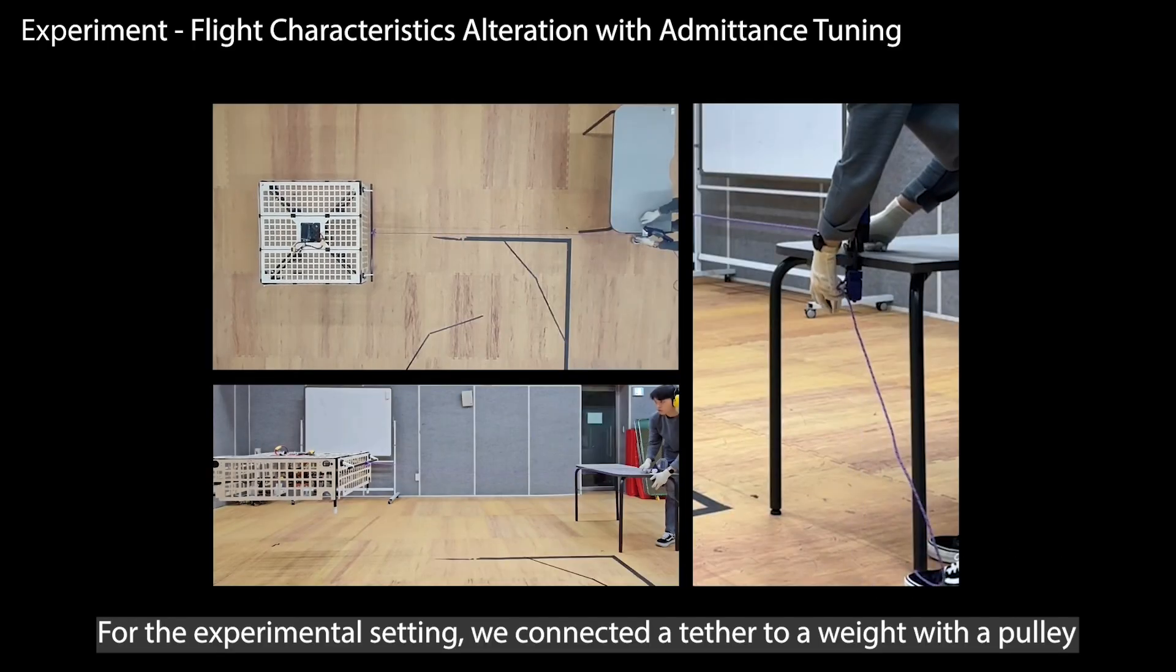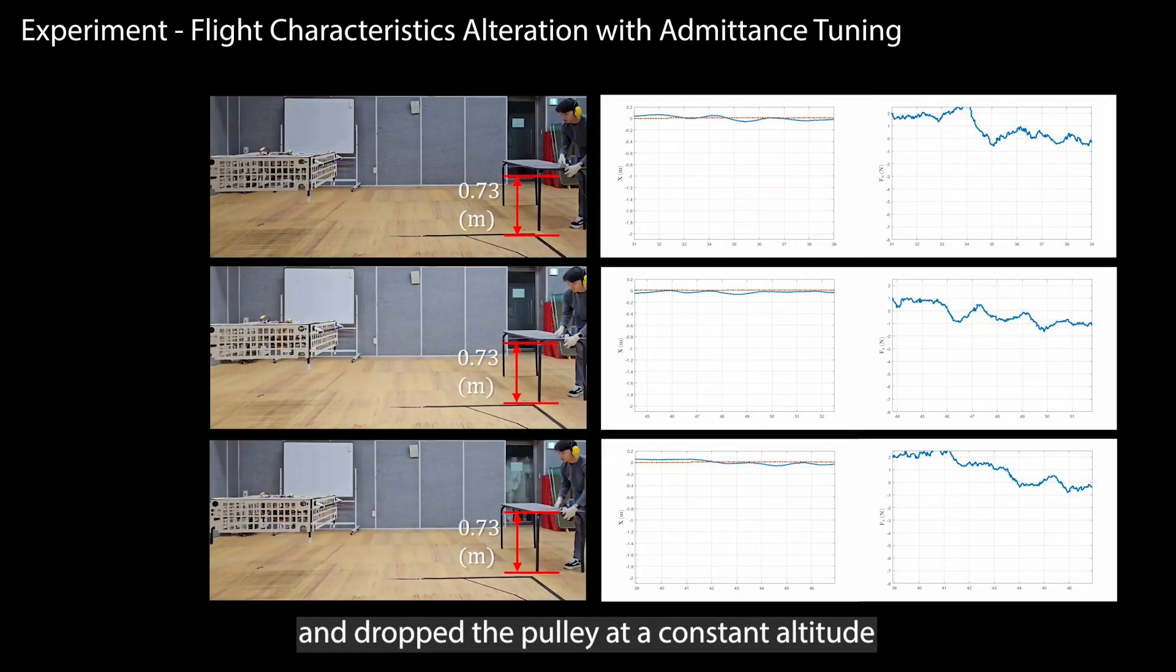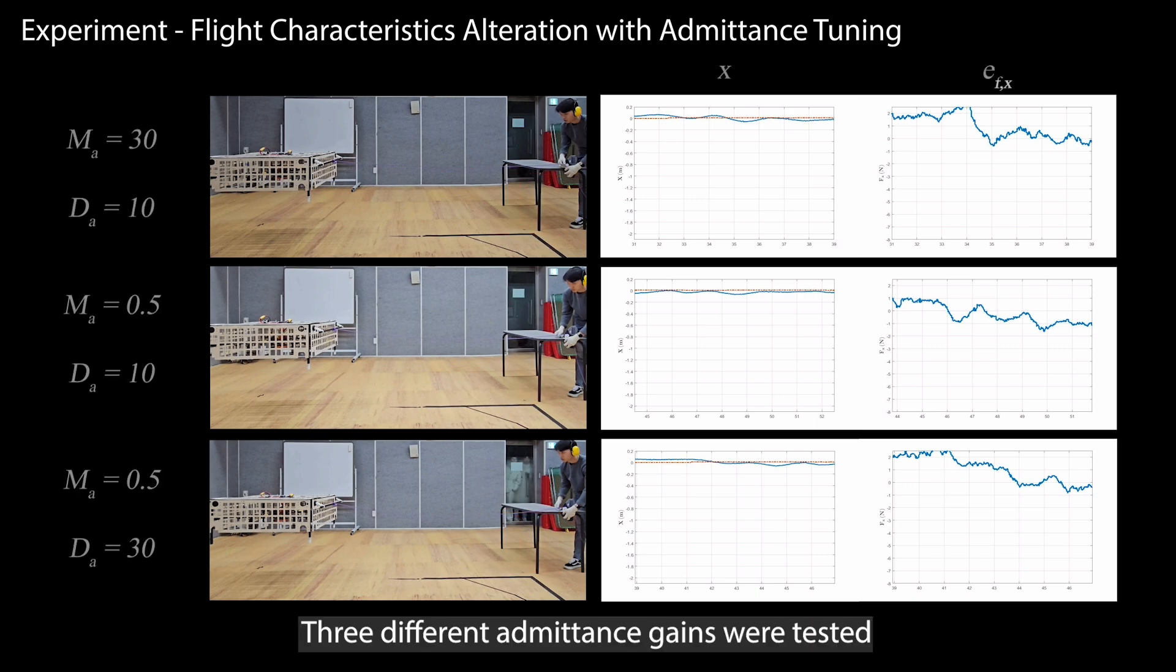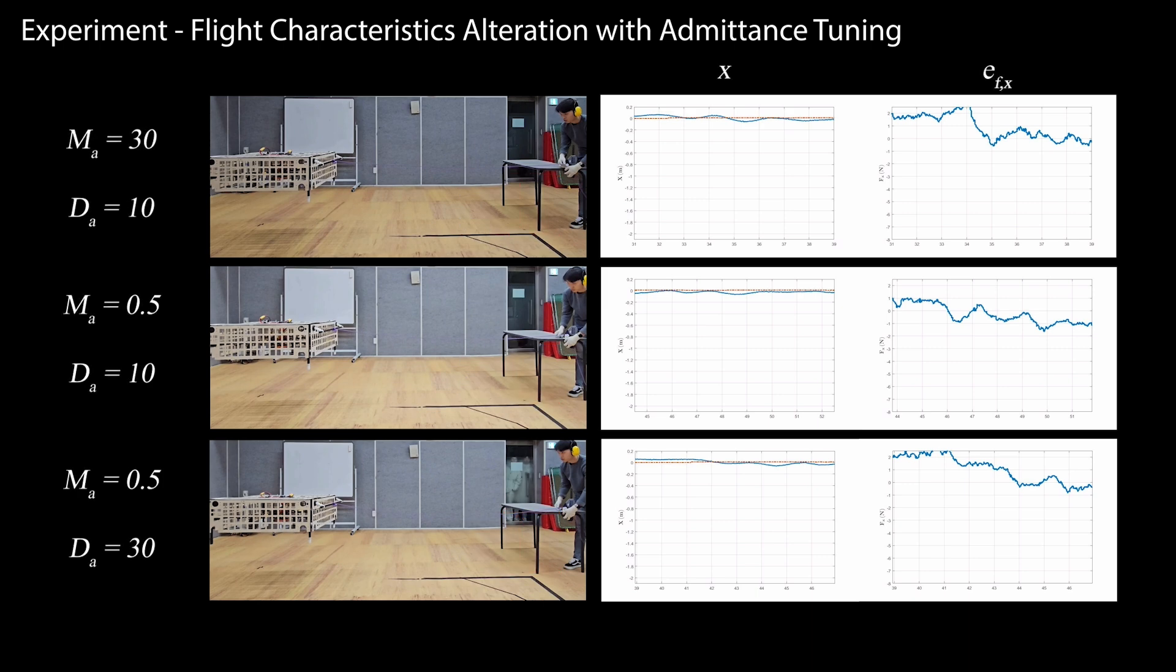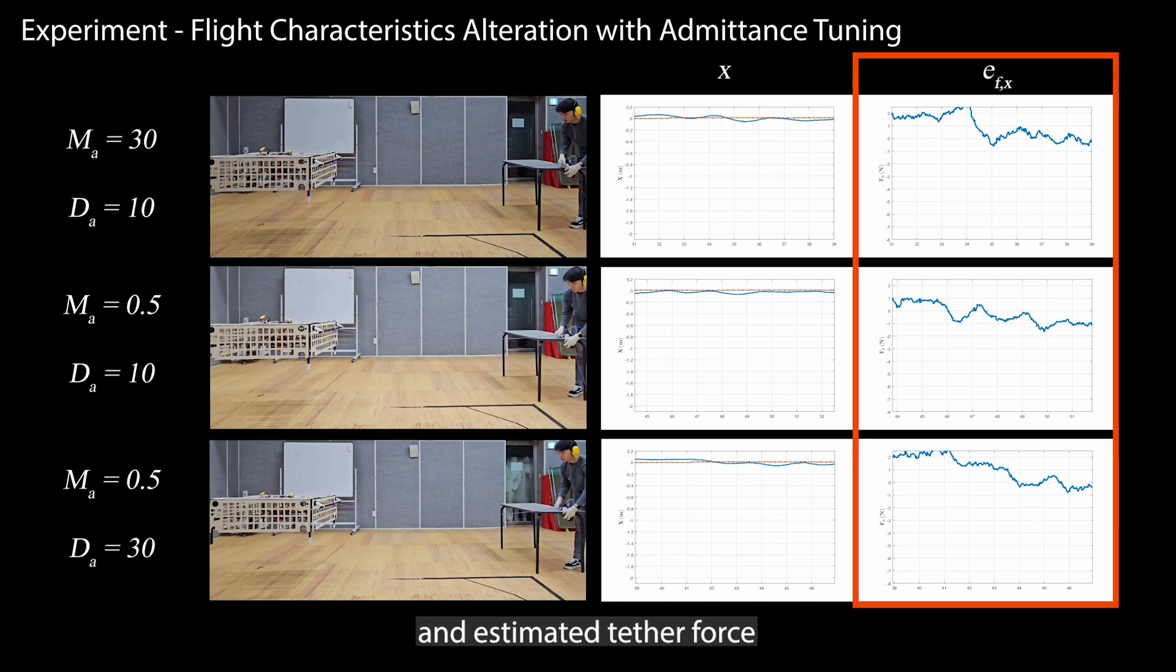For the experimental setting, we connected a tether to a weight with a pulley and dropped the pulley at a constant altitude. Three different admittance gains were tested. The graphs on the right show the desired and actual trajectory and estimated tether force.